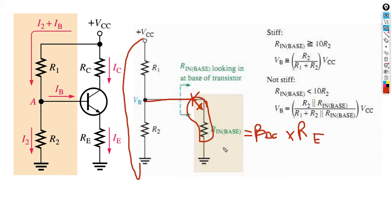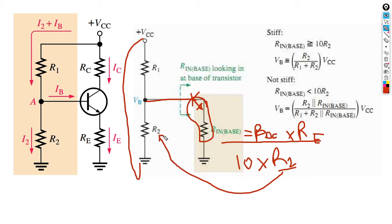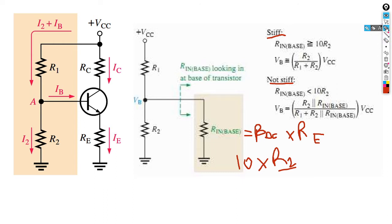Every time they give us a voltage divider circuit, we always start by calculating our R-in-base. Then you calculate 10 times R2 — R2 being the resistor of the voltage divider from which we are doing the division. Once we have done this first step, the second step is to check if your circuit is stiff or not stiff. What does it mean for a circuit to be stiff?